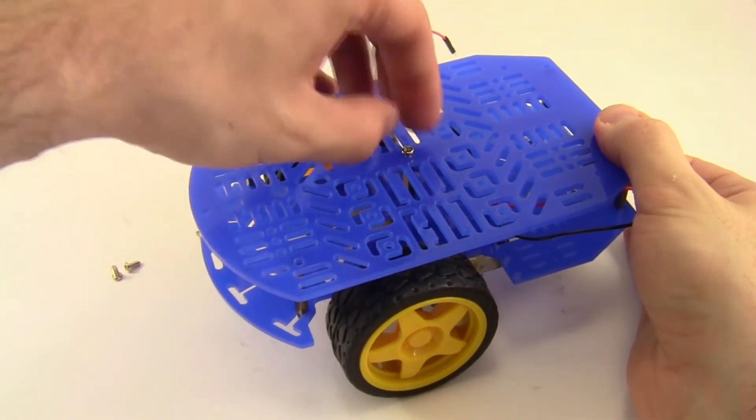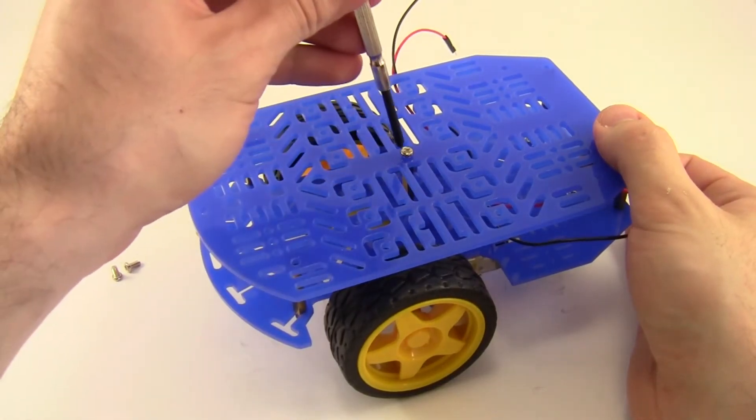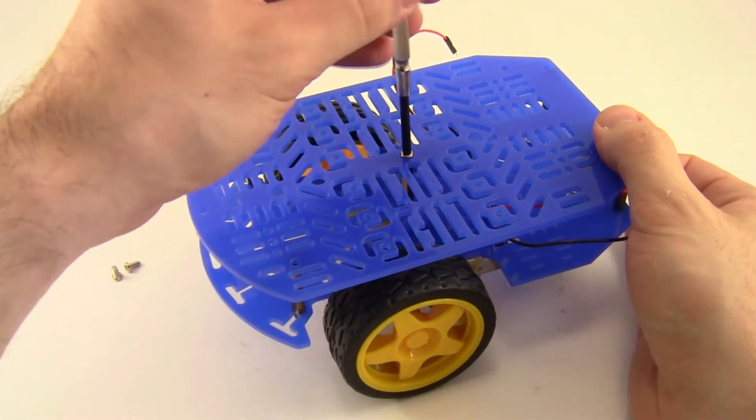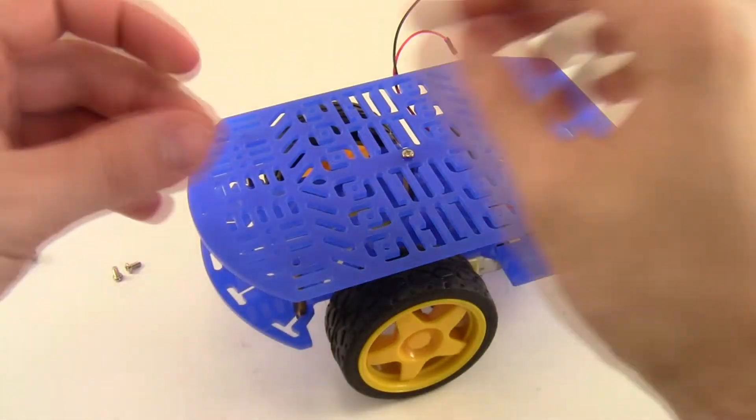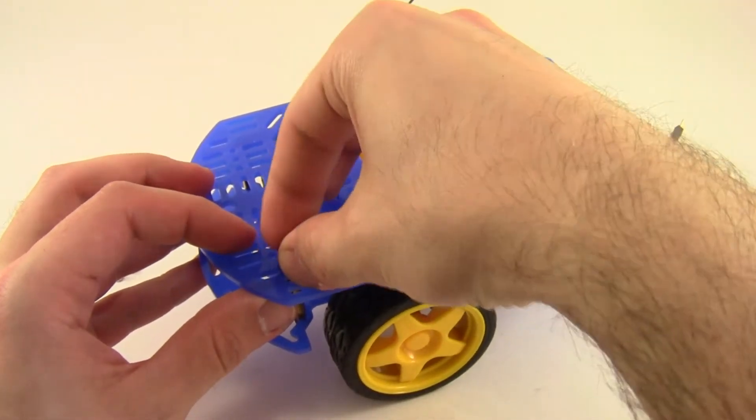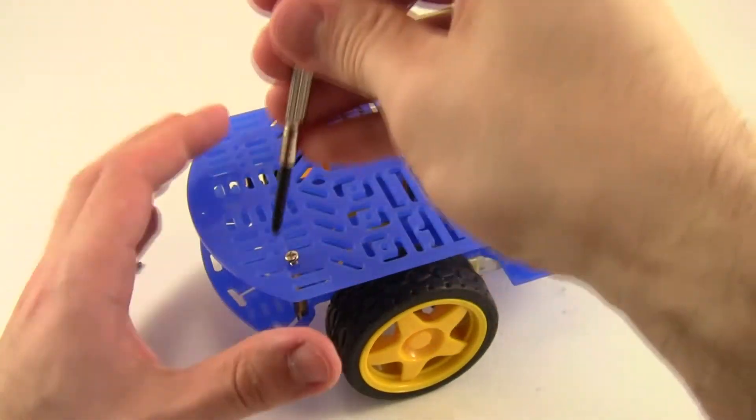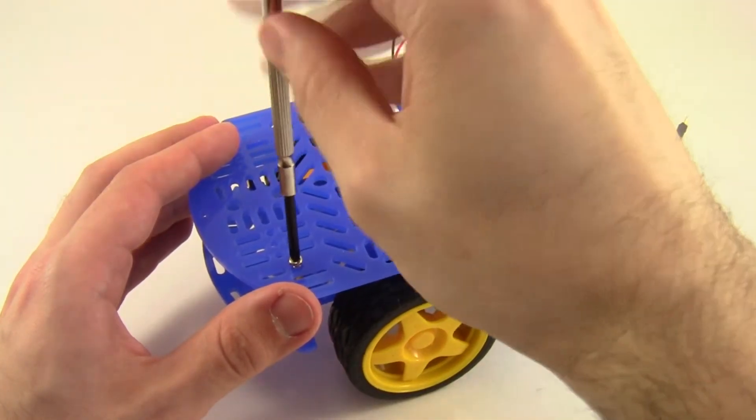If something doesn't line up, it might just be because you put a standoff in the wrong hole, so double check. You can also look at the printed directions that came with your kit if you need to see a close-up picture of which holes to use. So put screws in all five of those holes and then go around and tighten everything with your screwdriver.